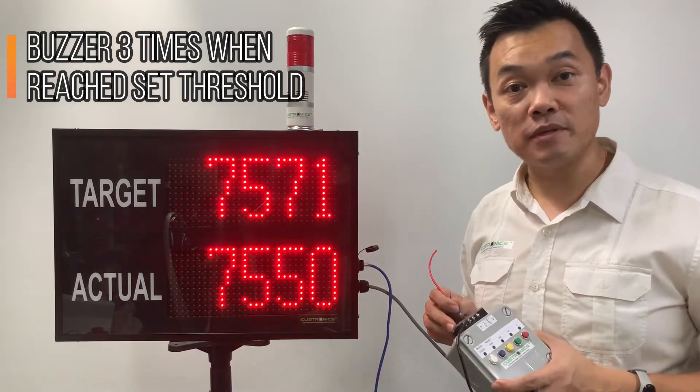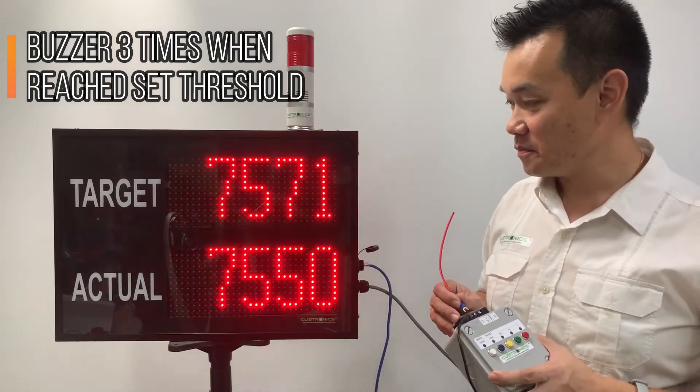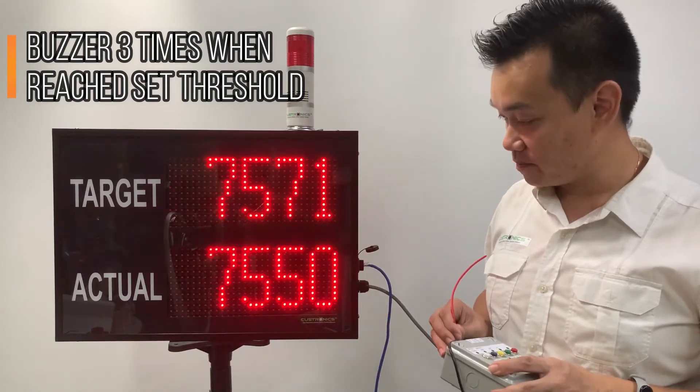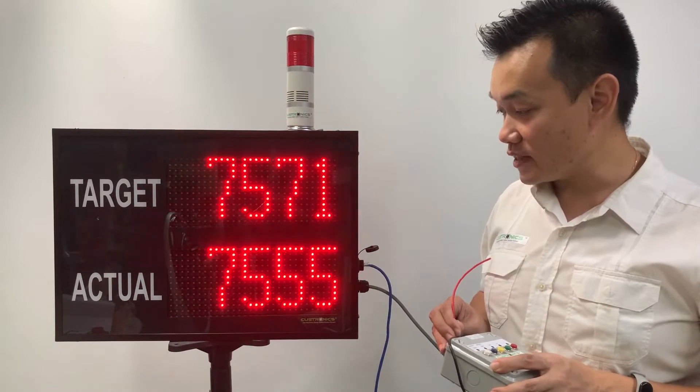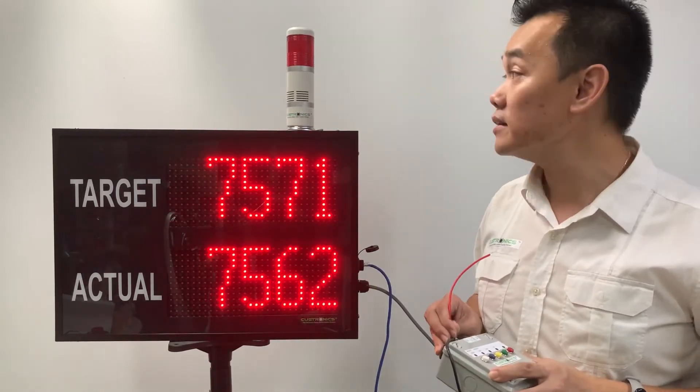It will sound three times. That means we set the threshold. This is how we set the threshold. Continue counting. Until the target is reached again, it will sound again, and this time the tower light will light up.